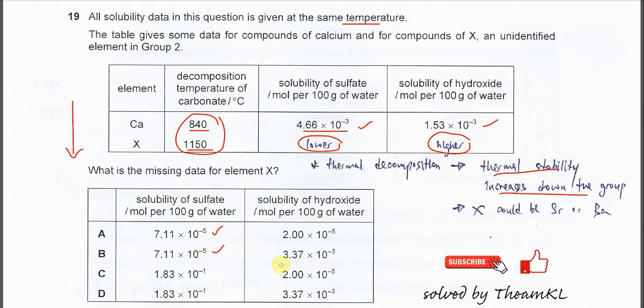The solubility of hydroxide for element X hydroxide should be higher than calcium hydroxide, which is this one. Therefore the answer is B. Okay, that's all, thank you.